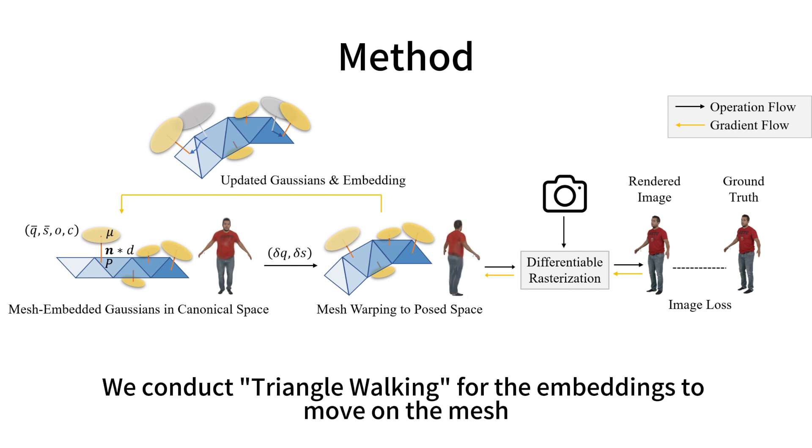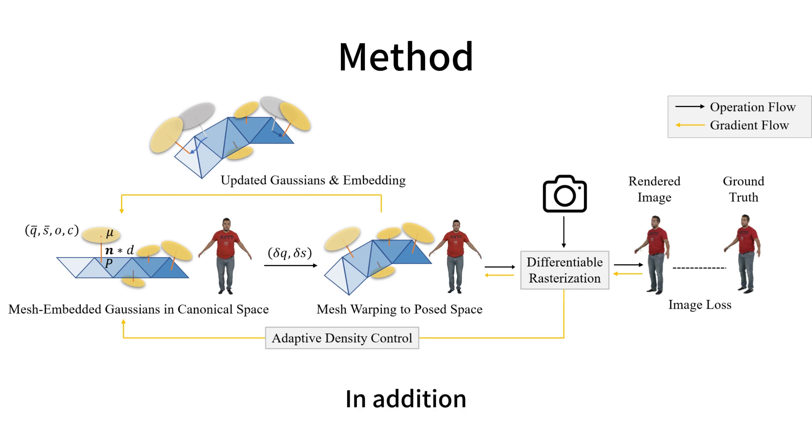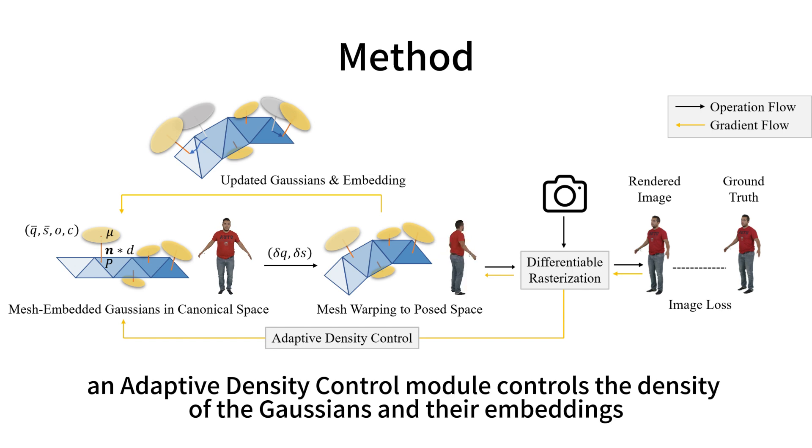We conduct triangle walking for the embeddings to move on the mesh. In addition, an adaptive density control module controls the density of the Gaussians and their embeddings.